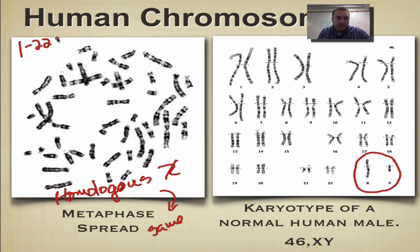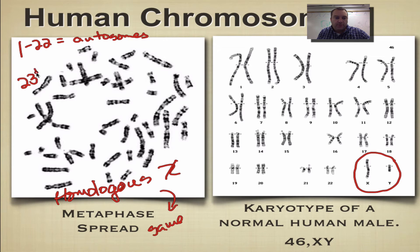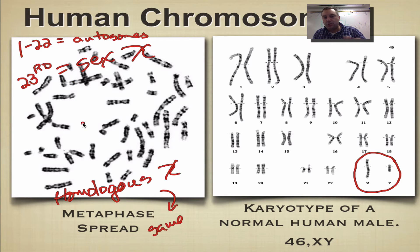Chromosomes one through 22 are called autosomes, and then the 23rd pair are the sex chromosomes. Remember — autosomes get numbers, and sex chromosomes get letters.